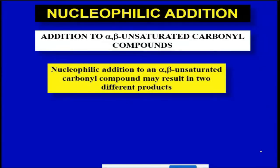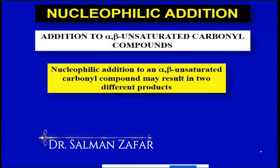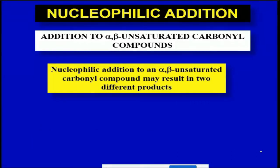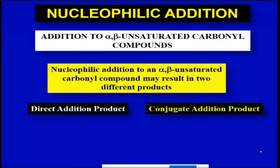Because we have two different carbon atoms — the carbonyl carbon and the beta carbon — attack of the nucleophile on this alpha-beta unsaturated compound will result in different products. We have a product called the direct addition product and the other product called the conjugate addition product.